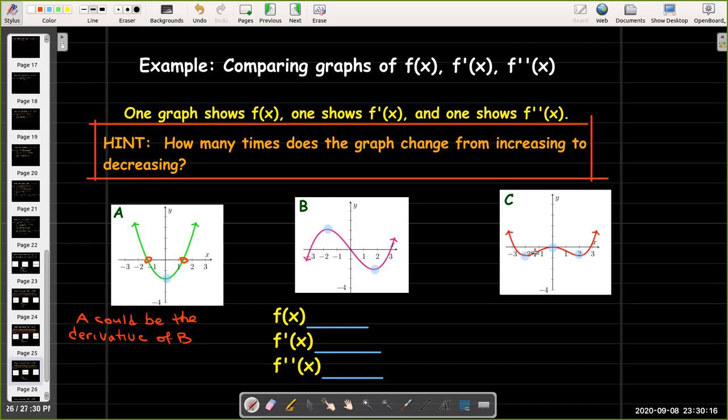And C has three points where it changes from increasing to decreasing. So the derivative of C would have to have three zeros, and graph B has three zeros. So B could be the derivative of C. Therefore, C is f(x), B would be f'(x), and A is f''(x). One final note.